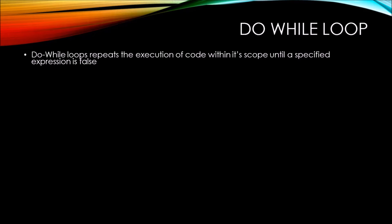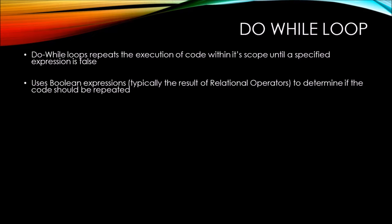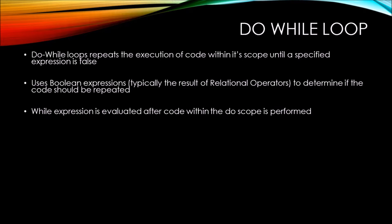This is very similar to the while loop, but with one significant difference. The do-while loop does use a Boolean expression, typically the result of a relational operator, to determine if the code should be repeated. The while expression is evaluated after the code within the do scope is performed, which means the code within the do scope is performed at least one time.